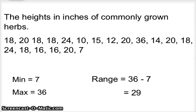Here's our data. We have the heights in inches of commonly grown herbs: 18, 20, 18, 18, 24, 10, 15, on down the set all the way down. We find that our minimum here is 7, and unless I really made a mistake, my maximum is 36.